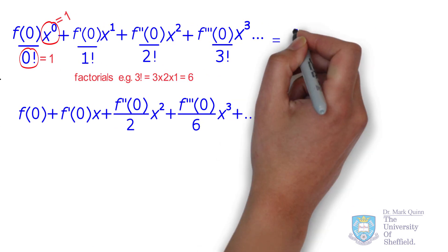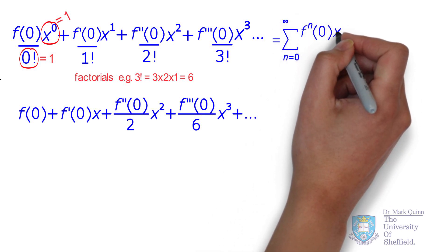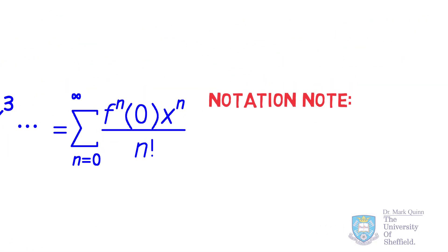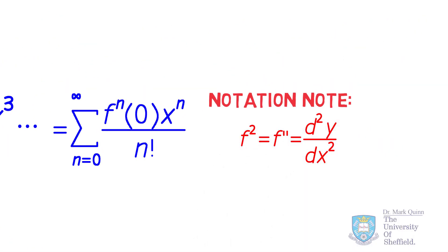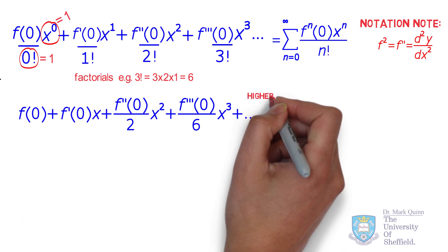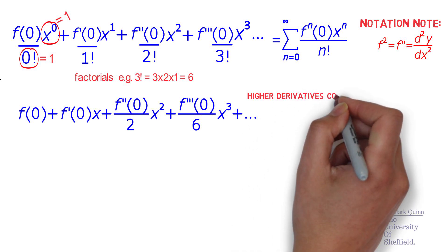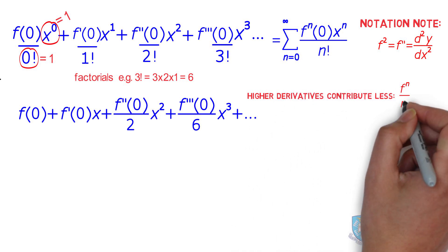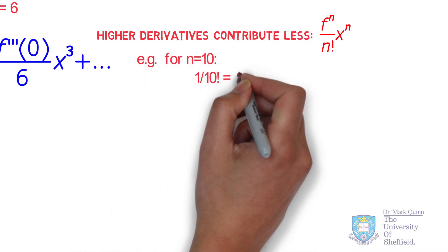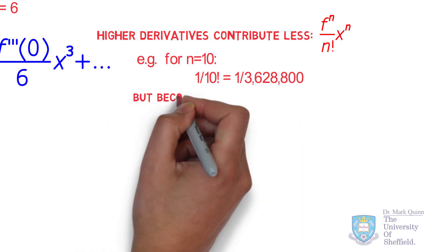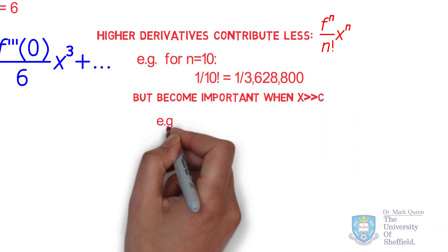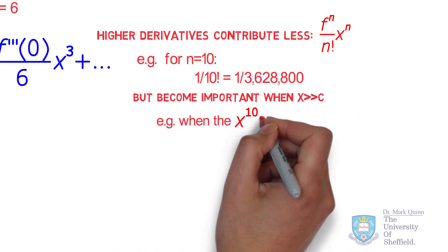This infinite series can be written using a summation, summing from n equal to 0 to n equal to infinity of the nth derivative f^(n) at zero, times x^n, divided by n factorial. This implies that higher order derivatives contribute less and less to the approximation. For example, for n equal to 10 we have 1 over 10 factorial, which is a very large number. Nonetheless, higher order derivatives contribute more the further we are from the center point, such that at very large values of x the higher order terms dominate.